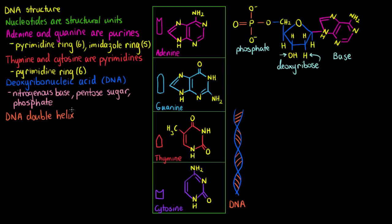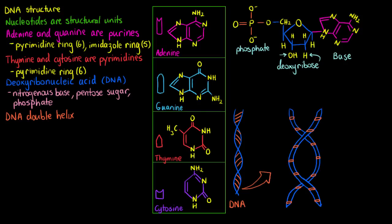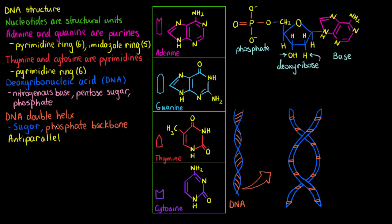If we zoom in to our DNA a little closer to get a better look at the individual components, we first see the backbone. The backbone has alternating blue and orange segments — the blue signifying our deoxyribose and the orange signifying our phosphate. So DNA has a sugar-phosphate backbone. Another extremely important feature of DNA is that it is antiparallel, meaning the two strands are parallel to each other but run in opposite directions — one strand runs upward while the other runs down.